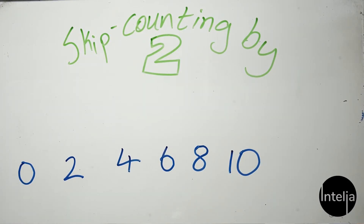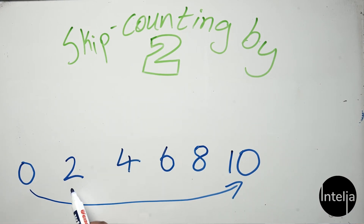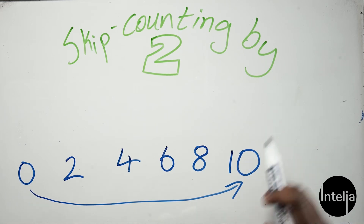Now let's count together: zero, two, four, six, eight, ten. That's how you skip count in twos from zero all the way to ten. One more time: zero, two, four, six, eight, ten! Well done. Now let me teach you how to skip count from zero all the way to twenty using the same technique.